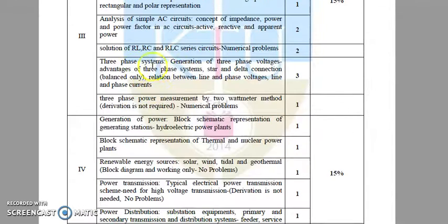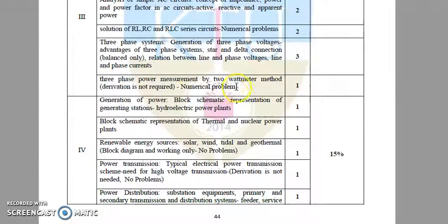The next section covers the three-phase system — generation of three-phase voltages, the relation between star and delta connected systems, comparison of star and delta connected systems, and the relation between line and phase values. An important topic in the third module is three-phase power measurement by the two-wattmeter method, with numerical problems related to that. Derivations are not required.